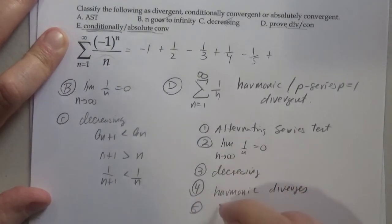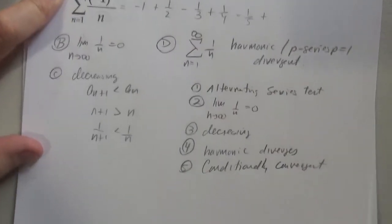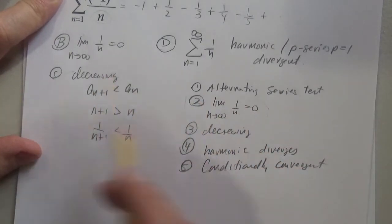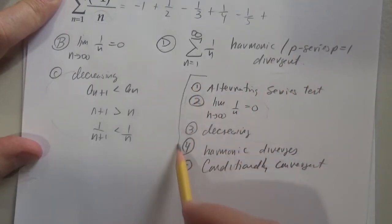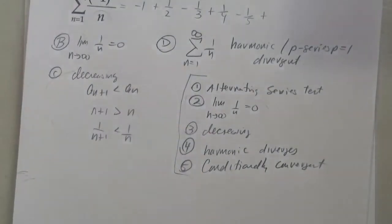And the fifth thing we need to write down is conditionally convergent. I really didn't need to rewrite these statements because I did it over here. I just want to make sure we're all okay that those are the five things you need to check to show you can apply the alternating series test.